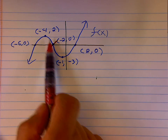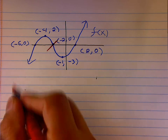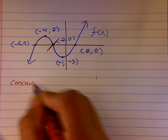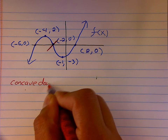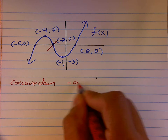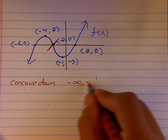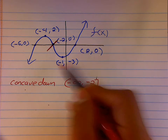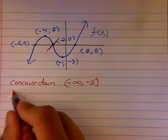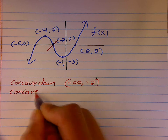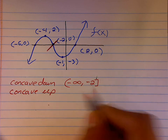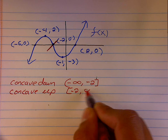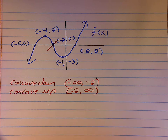So, the concavity: everything to the left is part of a frown — it is concave down from negative infinity to negative 2. Over here, it looks like it's part of a smile, so we say it's concave up from negative 2 to positive infinity.